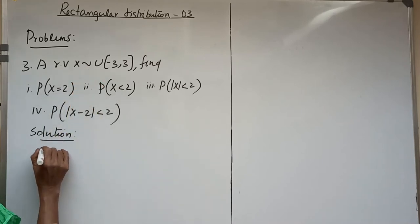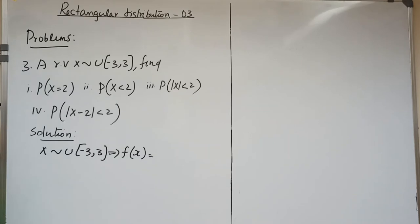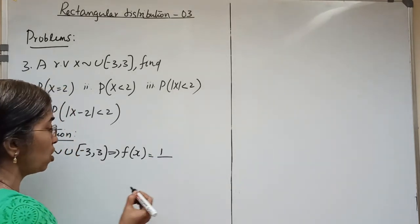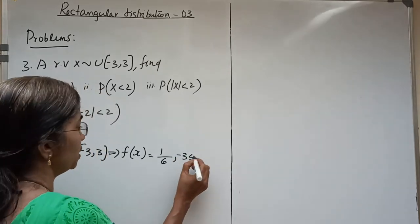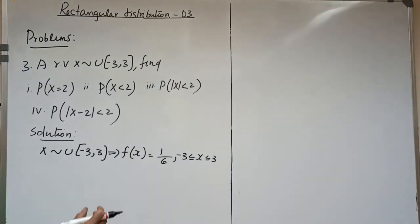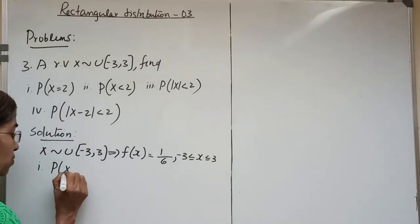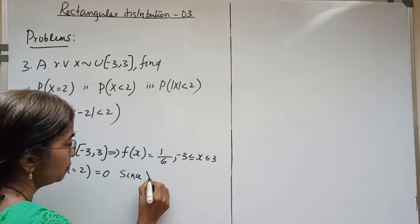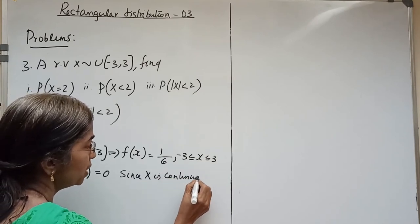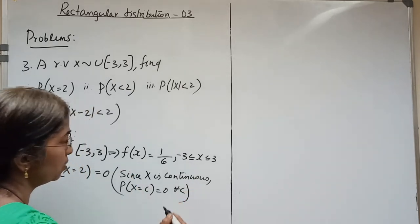Since X follows Uniform(-3, 3), f(x) = 1 by the length of the interval = 1/(3-(-3)) = 1/6, for -3 ≤ x ≤ 3. This is a rectangular distribution, meaning it is a continuous distribution. The first part is P(X = 2), which is definitely equal to 0. For a continuous random variable, P(X = any constant) = 0. Since X is continuous, P(X = z) = 0 for all z.